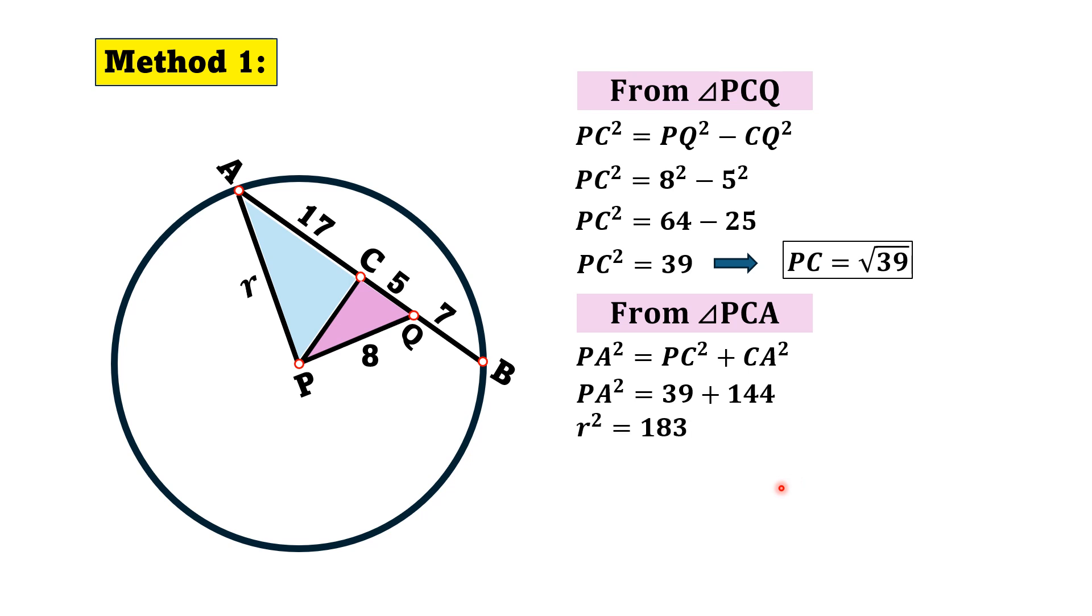So we have R square, PA is actually R, R square is equal to 183. And we know that area of a circle is equal to pi R square, and if we substitute the value of R square, then we will get area of circle is equal to 183 pi square units.